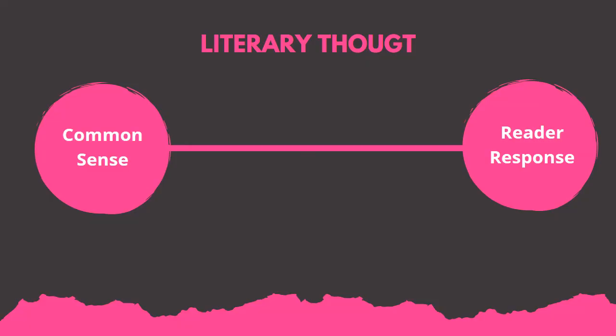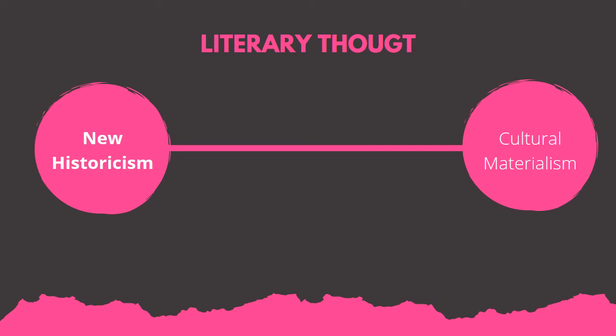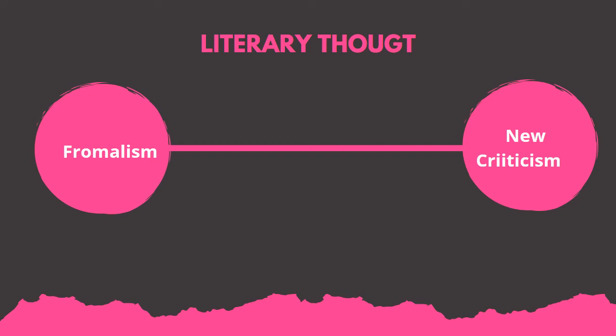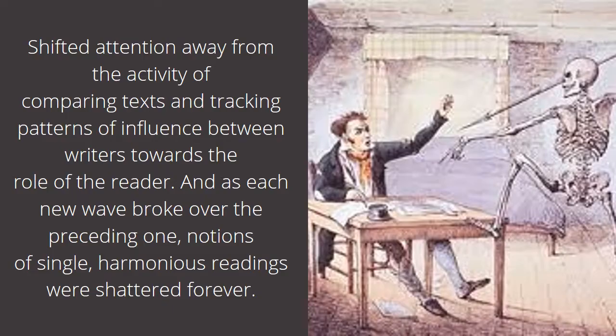Then there came literary thoughts and literary theories, and all the researchers turned towards them. These ranged from reader-response theory, structuralism to post-structuralism, colonial to post-colonial, new historicism to cultural materialism, semiology to psychoanalysis. All the researchers of the time turned their attention towards literary thought, and in understanding literature, they stopped comparing literary texts with each other. The attention was shifted from comparing texts and tracking patterns of influence between writers, toward the role of the reader.